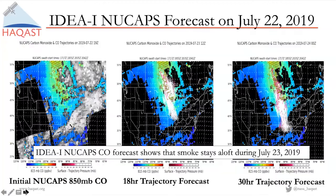Looking at the NUCAPS carbon monoxide forecast for the same day, the far left shows initial conditions with carbon monoxide concentration at 850 millibars — just above the boundary layer — with enhancements in the same region as the high aerosol optical depth in VIIRS data. The 18- and 30-hour trajectories show much stronger transport with more advection of high carbon monoxide to the south. Importantly, the trajectories are mostly white, indicating they are at least 250 millibars above the surface and remaining aloft, and it's these stronger winds aloft that result in advection of the carbon monoxide plume further south.